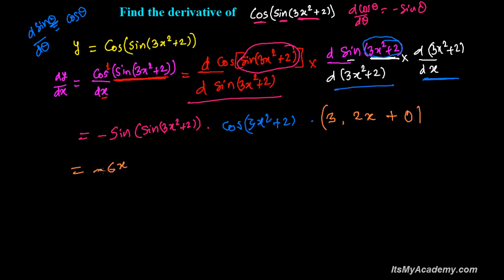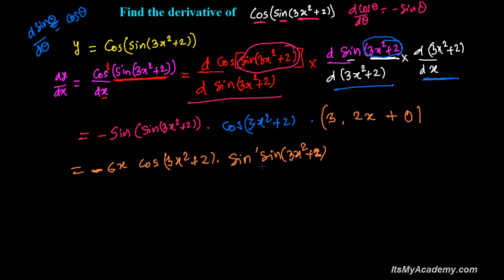Let's rearrange everything properly. Putting the minus sign in front, we get dy over dx equals negative 6x times cosine of 3x squared plus 2 times sine of sine 3x squared plus 2. This is the derivative of the given function. It was initially looking complex but it was quite interesting.